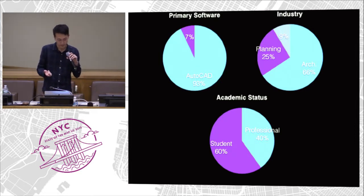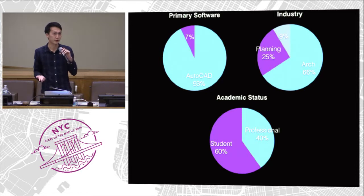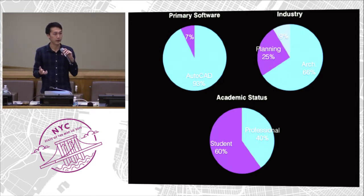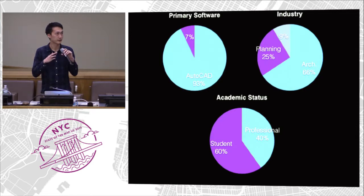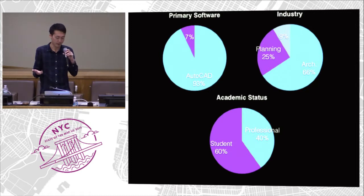Roughly two-thirds of them described their primary industry as architecture, 25 percent in urban planning, and the other 10 percent in other — some game developers, some product designers wanting to do 3D printing out of these OSM models. I also discovered that about two-thirds of my audience was students — a lot of them just working on their senior thesis, needing some geographical information. They Googled 'CAD map of Paris' and this was the first hit, and it worked for them.